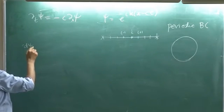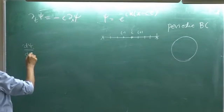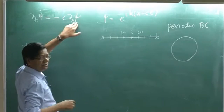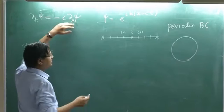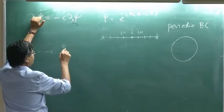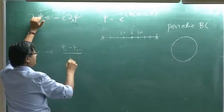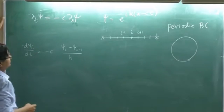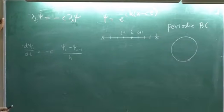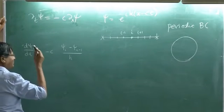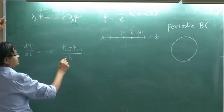So, d psi i d t. Now, I can use Euler scheme for this first order. I will write this as psi i minus psi i minus 1 by h. Or let us make a better accurate scheme psi i plus 1 minus psi i minus 1 by 2h.